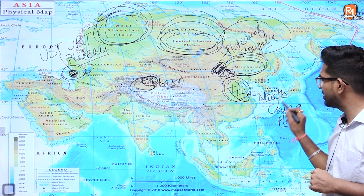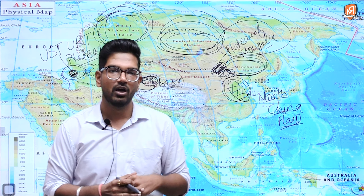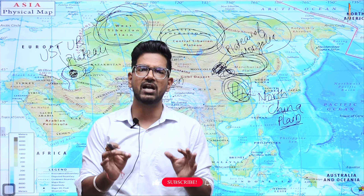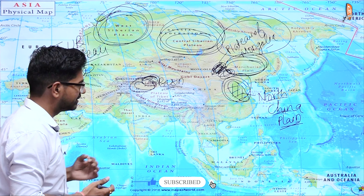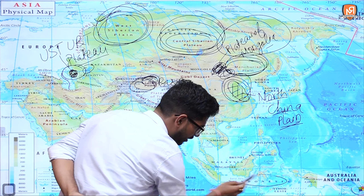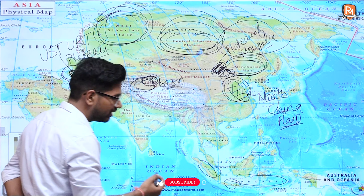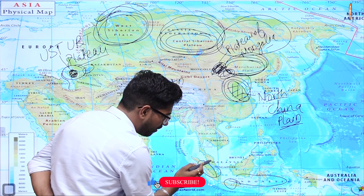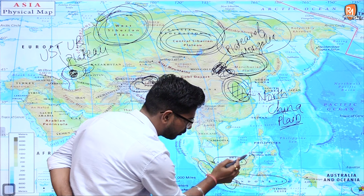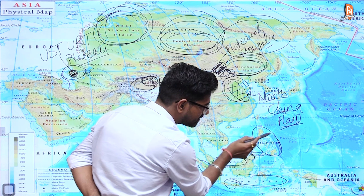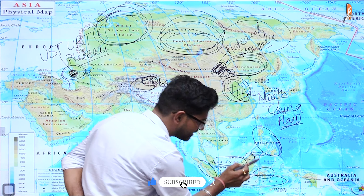Let us see the map work of Asia. We are doing Asia for quite a while and this is the second last video about Asia. We will be dealing with some important volcanic islands located in Asia in our remaining video, but this video is particularly for the plateaus and plains located in Asia. Let us start with the northernmost part. This is your West Siberian plains, towards your Europe side, towards the Ural side. Then this is your Central Siberian plateau.